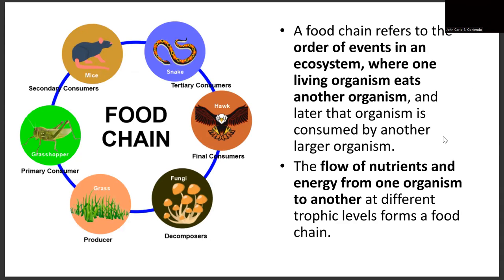The interaction within the ecosystem between biotic components can be seen through a food chain. A food chain is a single-line structure — when you have interconnected or interlinked food chains, we call it a food web. A food chain talks about the sequence wherein one organism is eaten by another, and refers to the flow of nutrients and energy from one organism to another at different trophic levels.